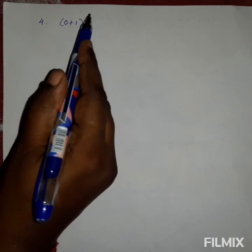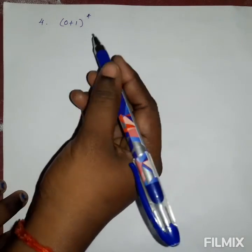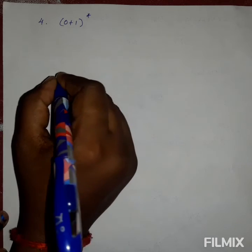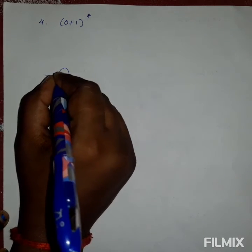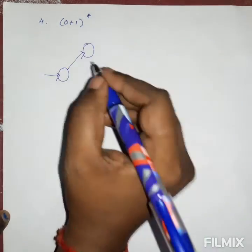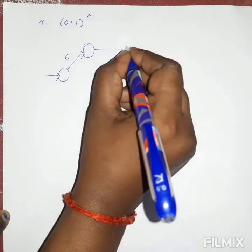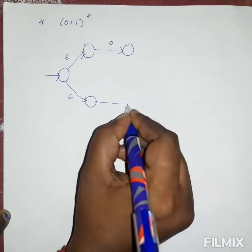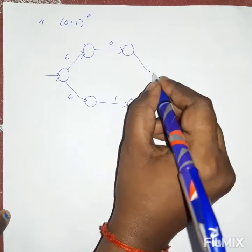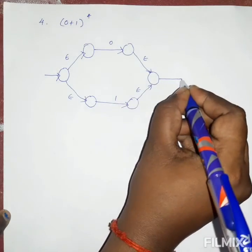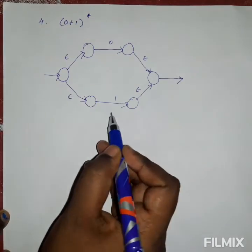The next regular expression is (0+1)*. Already we know how to draw for 0+1, so first we draw for 0+1 and then add the star closure. For 0+1: the initial state goes via epsilon to a state that gets 0, and also via epsilon to a state that gets 1; both then rejoin via epsilon to a final state. This gives the epsilon-NFA for 0+1.